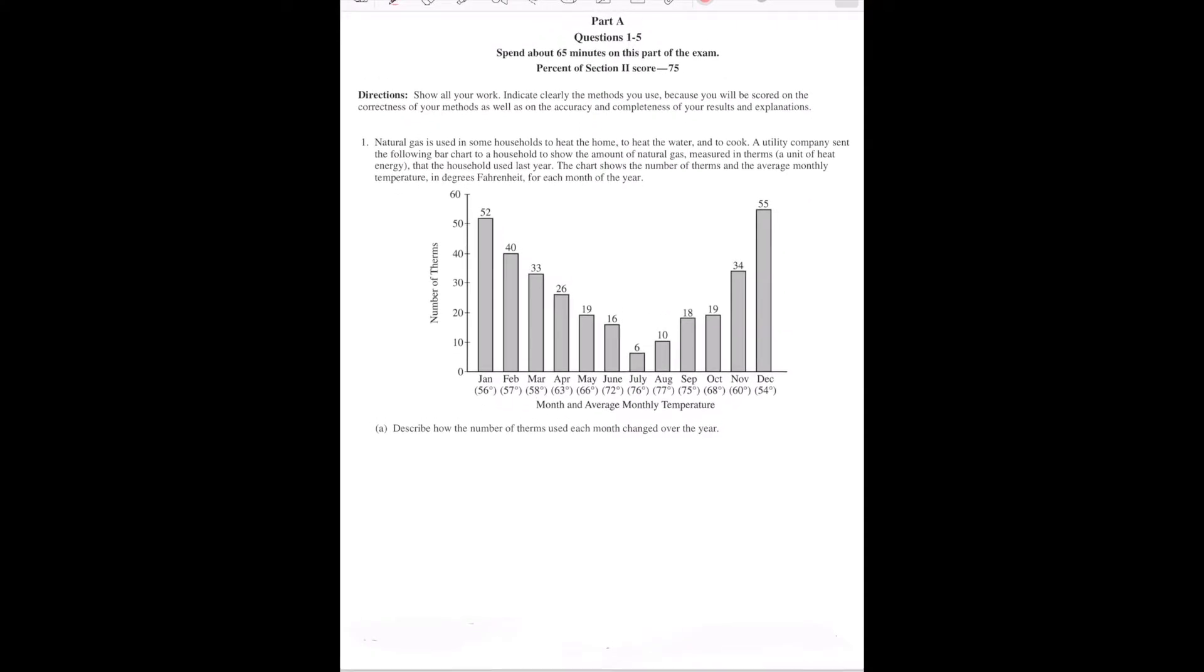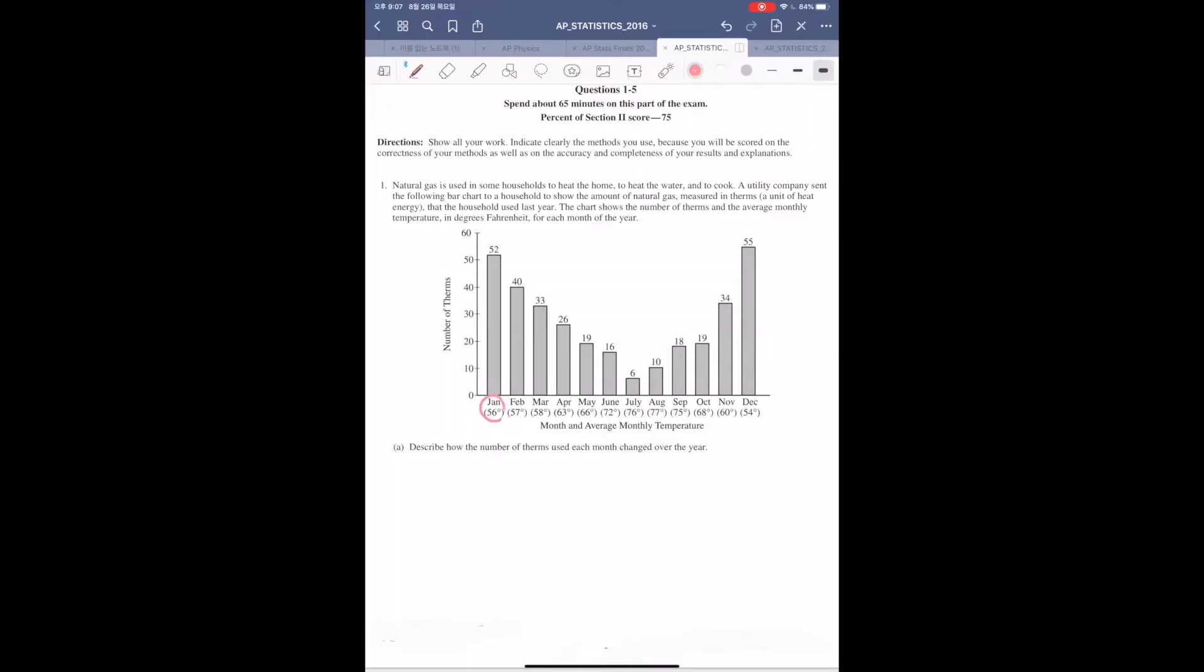The chart shows the number of therms and the average monthly temperature in degrees Fahrenheit for each month of the year. So, the first question, describe how the number of therms used each month changed over the year. Well, I think this question is pretty easy, right? Because you can clearly see from January to July, it is decreasing, right? But from July to December, it is actually increasing.